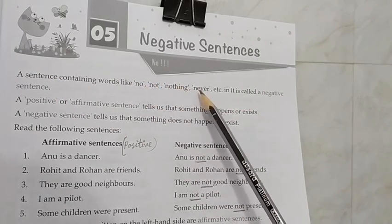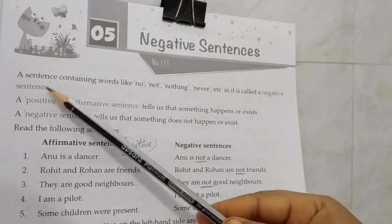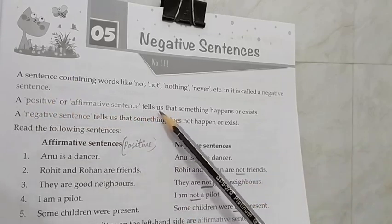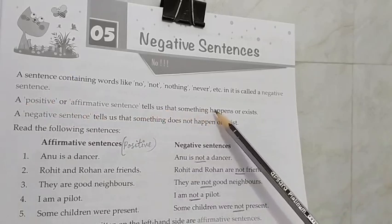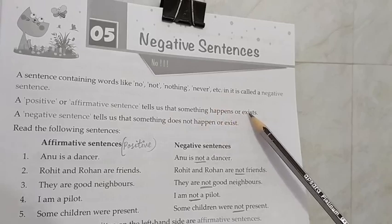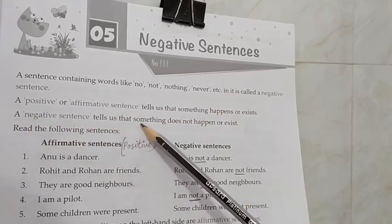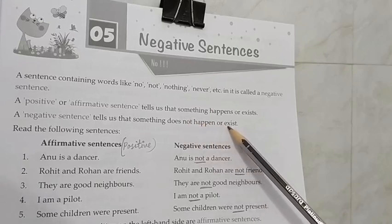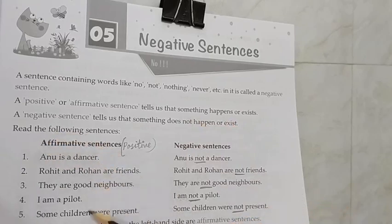in it is called a negative sentence. A positive or affirmative sentence tells us that something happens or that it exists. A negative sentence tells us that something does not happen or exist.